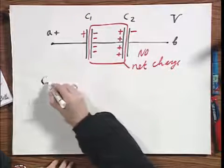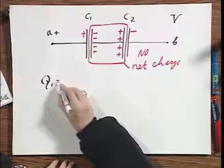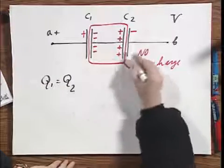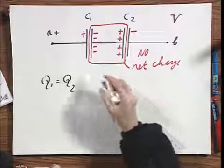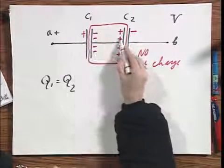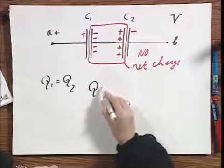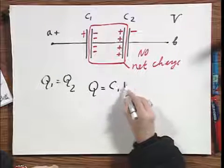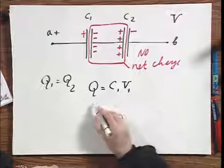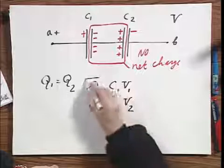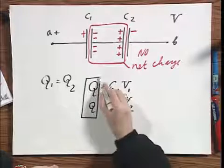Therefore, Q one equals Q two. The charge on here is the same as the charge on there. Because charge left is charge right, and charge left is charge right. So now we have Q equals C1 times V1, and we have Q equals C2 times V2. And now these two are the same.